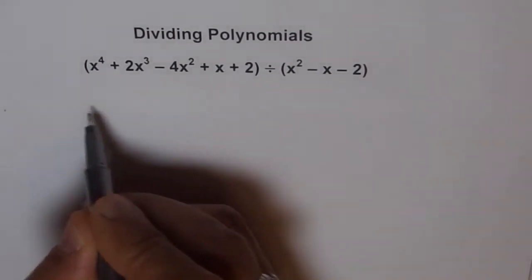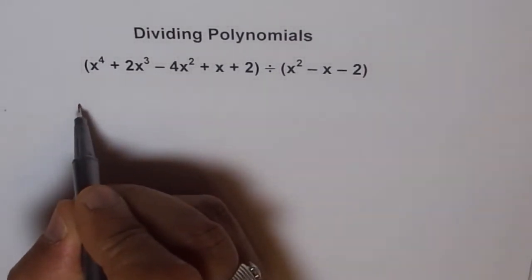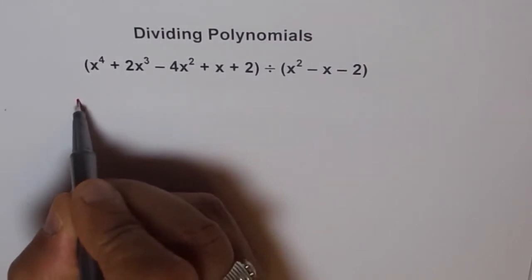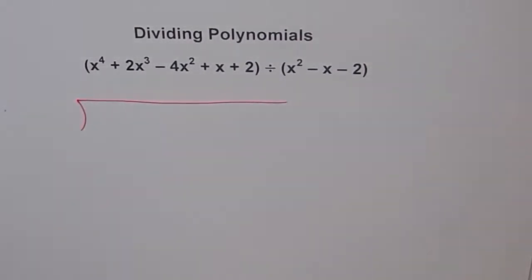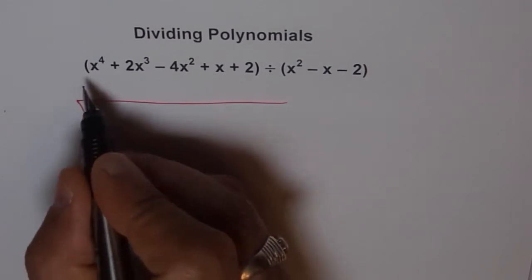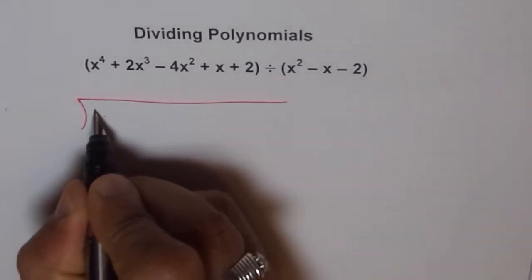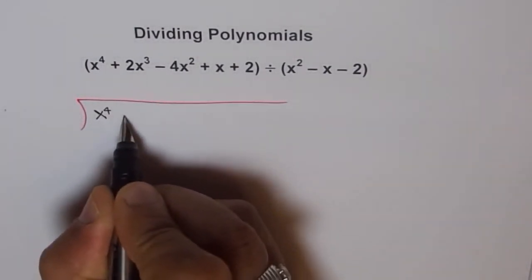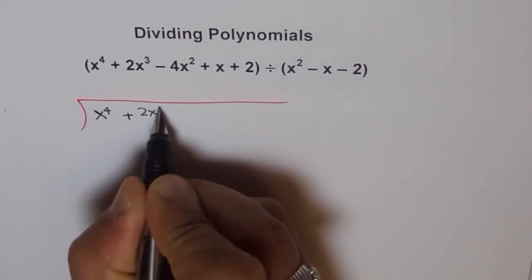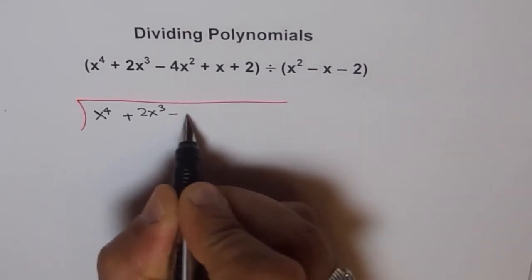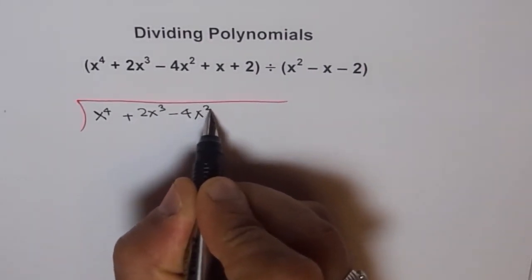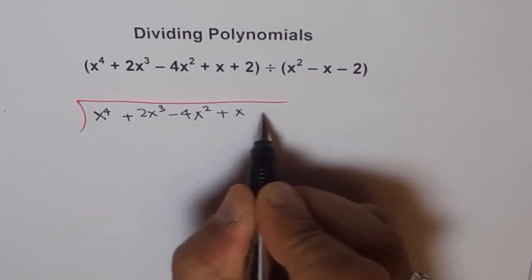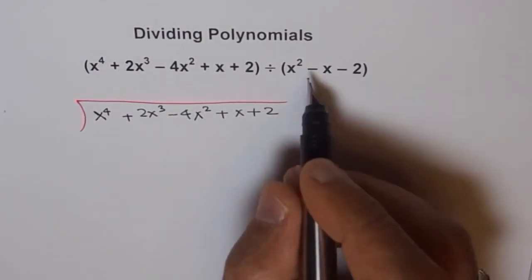Think about it and let me know. Meanwhile, I will make my division process start. We are dividing x to the power of 4 plus 2x cubed minus 4x squared plus x plus 2 by x squared